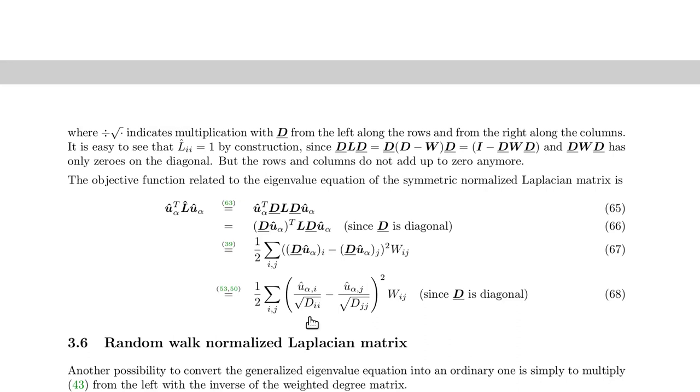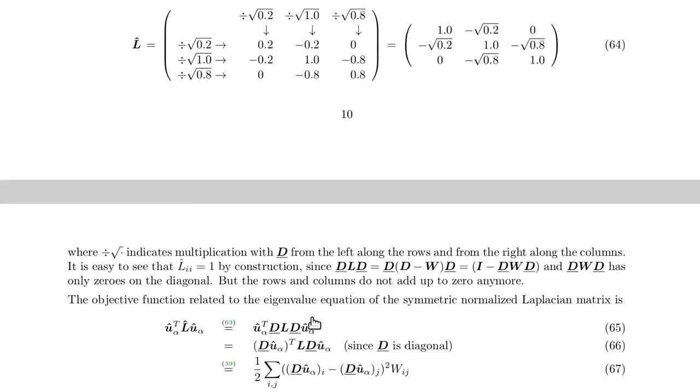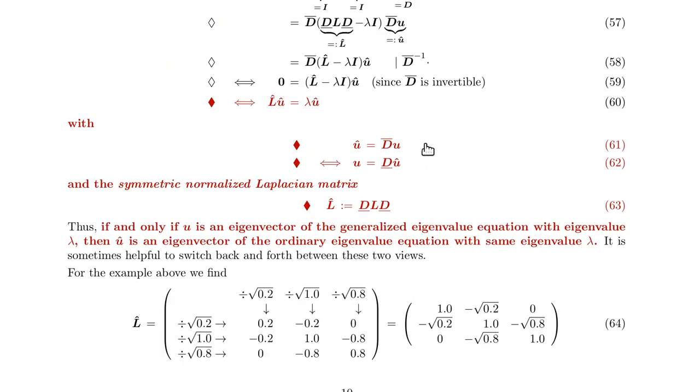So we see the generalized eigenvalue problem can be transformed into an ordinary one, which is maybe easier to deal with or more familiar. Then with the mapping that we have defined up here, we can map the one solution onto the other solution of the generalized eigenvalue problem.